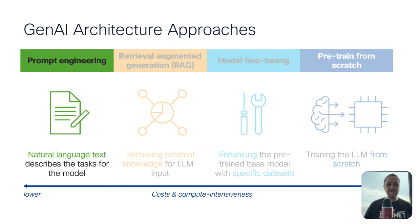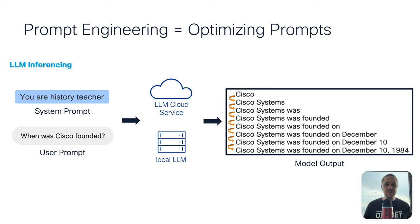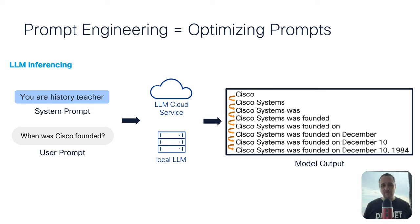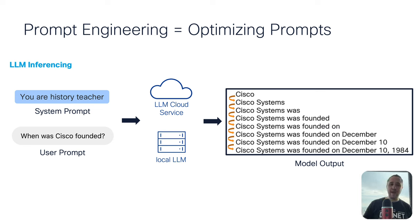Let's go to the next one: Prompt Engineering. I think most of you are familiar with it. It's natural language text that describes the task for a specific model. With prompt engineering, you optimize the prompts. We are not in training here, we are just in inferencing. You have a system prompt — for example, 'you're a history teacher' — and then a user prompt like 'When was Cisco founded?' You can use a local large language model or an LLM cloud service via REST API, and then you get the model output in JSON or plain text.